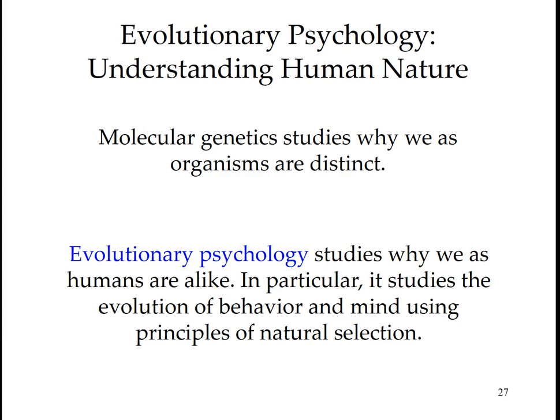Molecular genetics studies why we as organisms are distinct, while evolutionary psychology studies why we humans are alike — in particular, the evolution of behavior and mind using principles of natural selection. In dozens of labs worldwide, molecular geneticists are teaming with psychologists in the search for genes that put people at risk for genetically influenced disorders. Potentially, steps may be taken to prevent problems before they happen; however, this also brings the risk of labeling people in ways that may lead to discrimination.